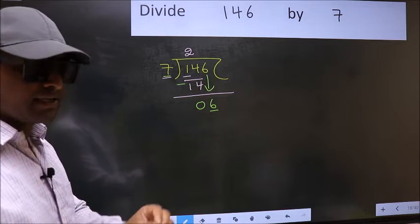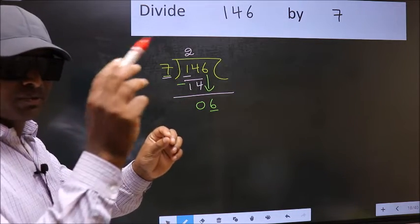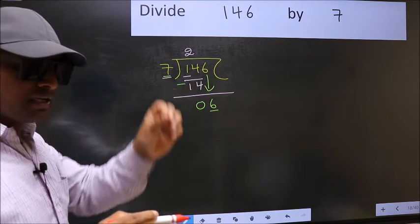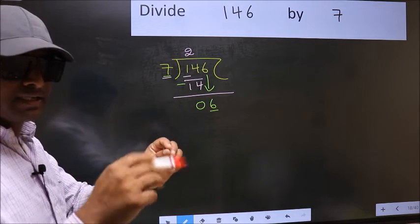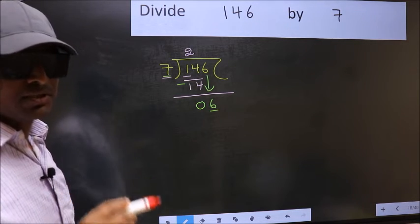I repeat: bringing the number down and also putting the dot and taking 0—doing both at the same step—you should not do this.